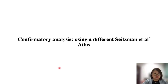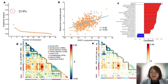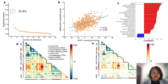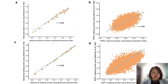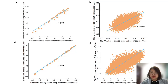We also conducted a confirmatory analysis using a different brain atlas. The PLS results remained largely unchanged when using a different atlas containing 300 regions, showing the robustness of the obtained latent variable, which was further ensured by using this alternative parcellation.